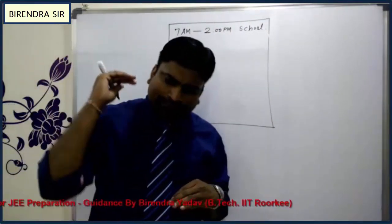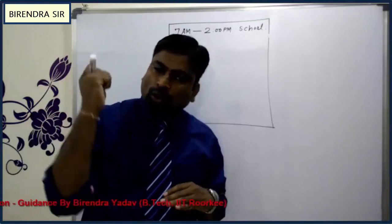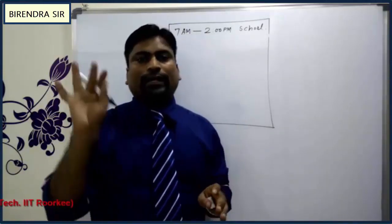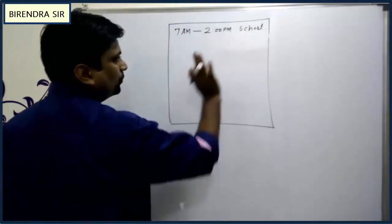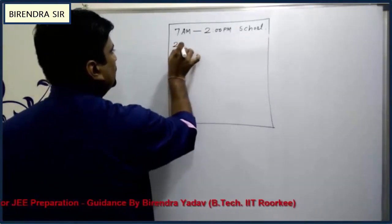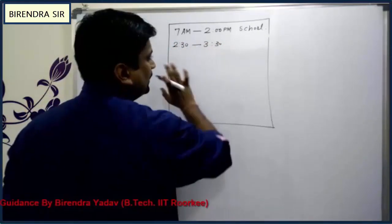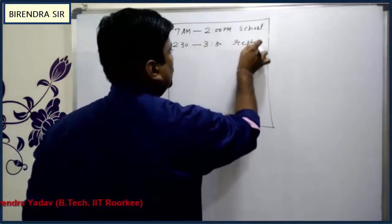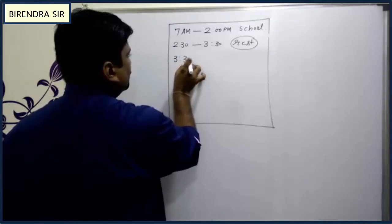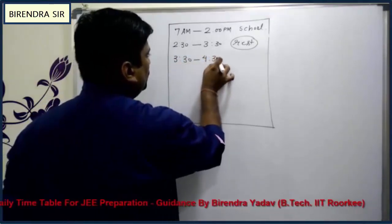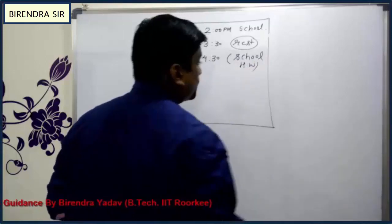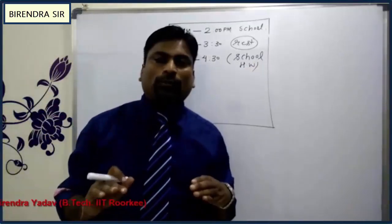Whatever you want to do on Monday — like play or watch a movie — write everything. If you come back by 2:30, write 2:30 to 3:30 as rest and lunch. Then from 3:30 to 4:30, do school homework, so you don't face any problems at school.